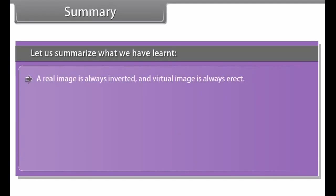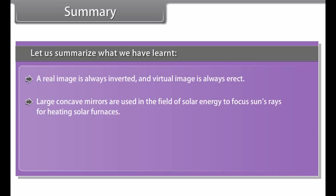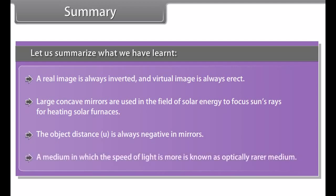Summary: In a concave mirror, reflection takes place at the bent-in surface; in a convex mirror, it takes place at the bulging-out surface. The radius of curvature is the radius of the hollow sphere of glass of which the mirror is a part. The focus of a convex mirror is situated behind the mirror. A real image is always inverted and a virtual image is always erect. Large concave mirrors are used in solar energy to focus the sun's rays for heating solar furnaces. The object distance U is always negative in mirrors. A medium in which the speed of light is greater is known as an optically rarer medium.